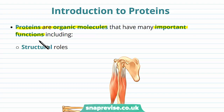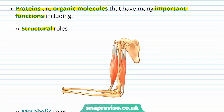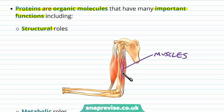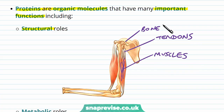One of the biggest roles proteins have is the structural role, where they can be found building up a lot of structures in the body. For example, muscles, as they build up the strength and structure of the muscle fibers. They also form the structure of tendons, which help attach muscles to our skeleton and allow us to move at joints, and they have some part to play in bone as well.